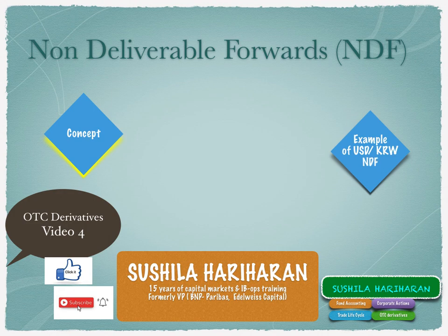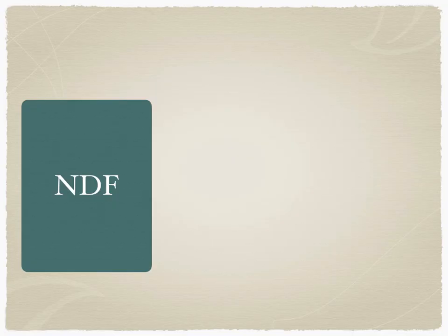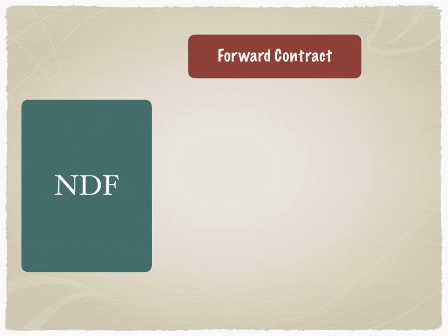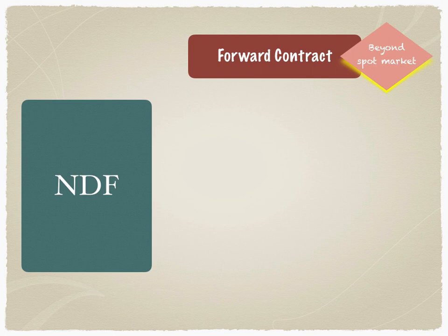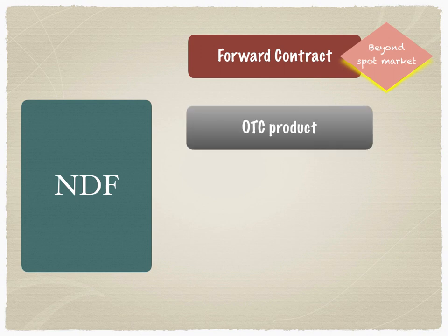Let's take an example of a USD/KRW — KRW standing for Korean won — NDF, and then explore the key terms in an NDF structure. An NDF is a forward contract, meaning it's beyond the spot market. Any market where delivery takes place beyond the spot market is called a forward market, which can be as short as one week or as long as six months.